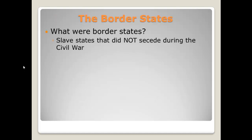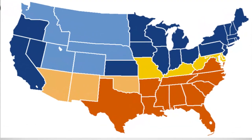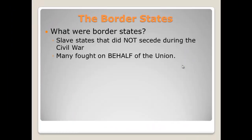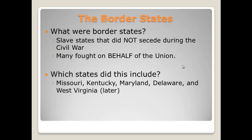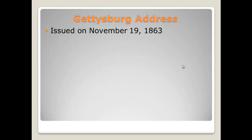The border states were slave states that did not secede during the Civil War. Looking at the map, blue states are free states, orange are Confederate states, and yellow are border states — right between the North and the South. They had slaves but did not secede. These included Missouri, Kentucky, West Virginia (formed during the Civil War), Maryland, and Delaware. Many people in these states fought on behalf of the Union even though they had slaves.